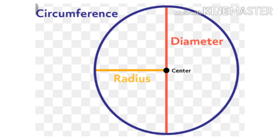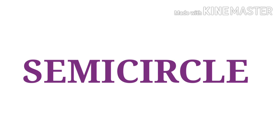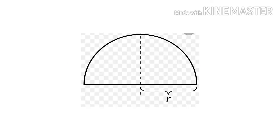Next is circumference. The perimeter or the boundary of the circle is called its circumference. Next is semicircle.